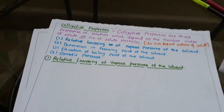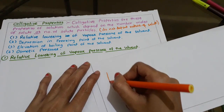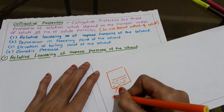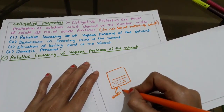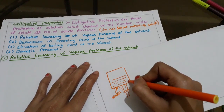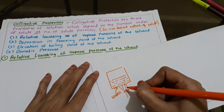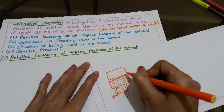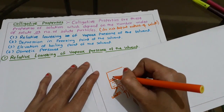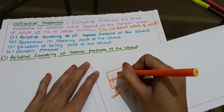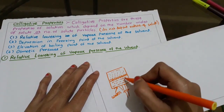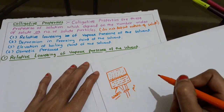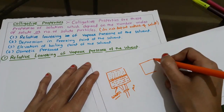To understand relative lowering of vapor pressure, consider an experiment with two closed containers. In the first container, I have taken pure water as the solvent. At some temperature, when heat is applied, the water molecules on the surface of the liquid get vaporized and produce vapor pressure. This vapor pressure is exerted only by the pure solvent, denoted as P naught.